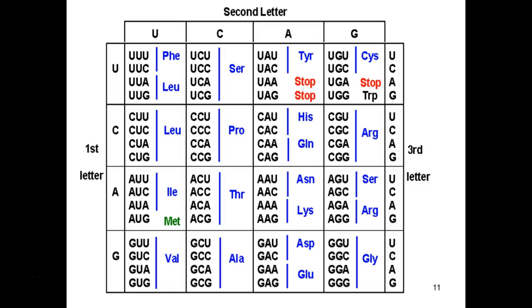How does the ribosome know which amino acid to put there? It's in the code, read in groups of three — each time it sees three nucleotides, that's a codon that means something to the ribosome. More specifically, the transfer RNA comes in: the ribosome is matching up transfer RNAs that have an anticodon to this codon. In the case of UUU, the anticodon is AAA, and that transfer RNA carrying phenylalanine matches up.